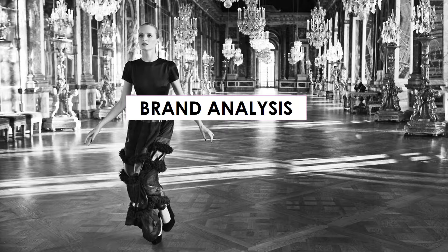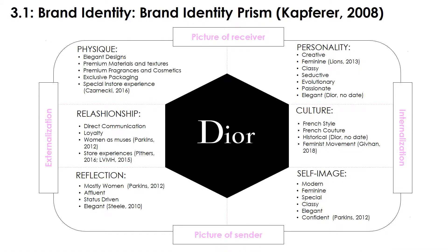Let's now move to the brand analysis. Applying Kapferer's brand identity prism with the six brand facets, it can be said that Dior relies on its elegant designs, premium materials, fragrances, and cosmetics, exclusive packaging, and special store experiences to build its brand physique, or its tangible added value. Dior created its brand personality by focusing on characteristics like creativity, elegance, class, and femininity, and its culture by building it around the French style and couture, while more recently it adopted the feminist ideology.